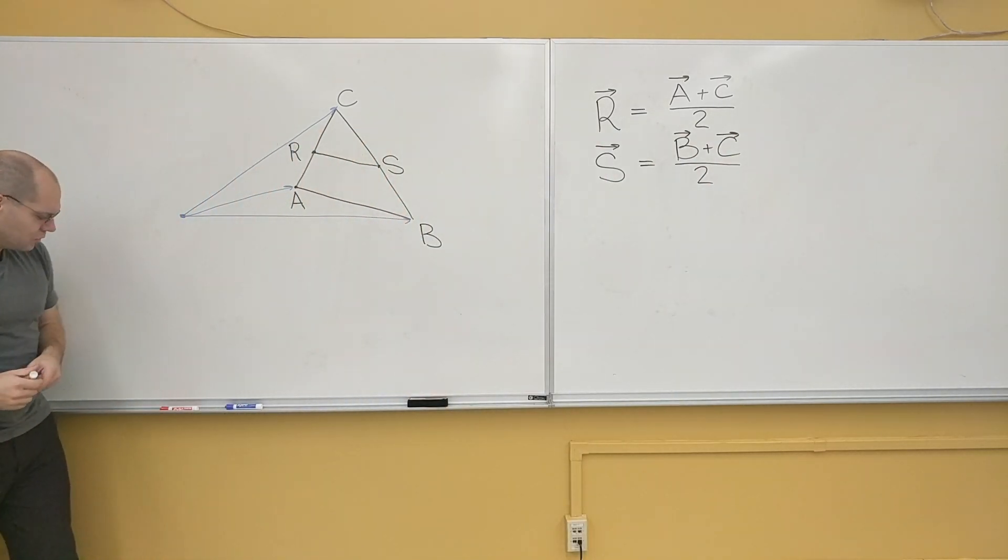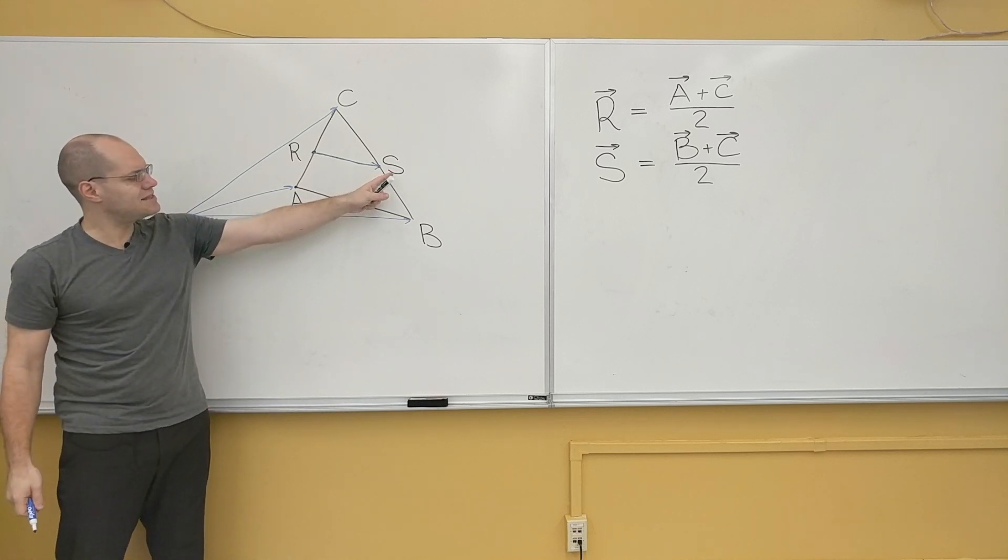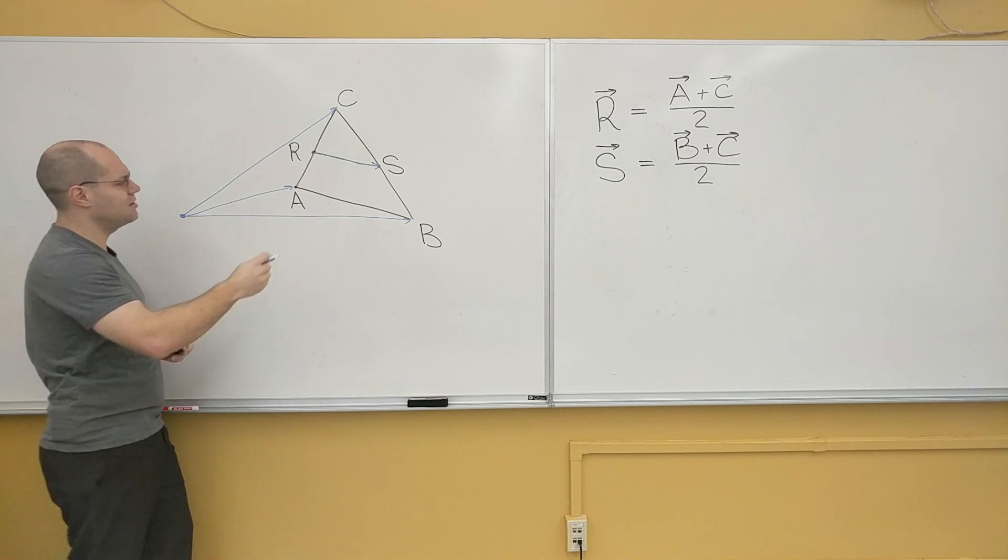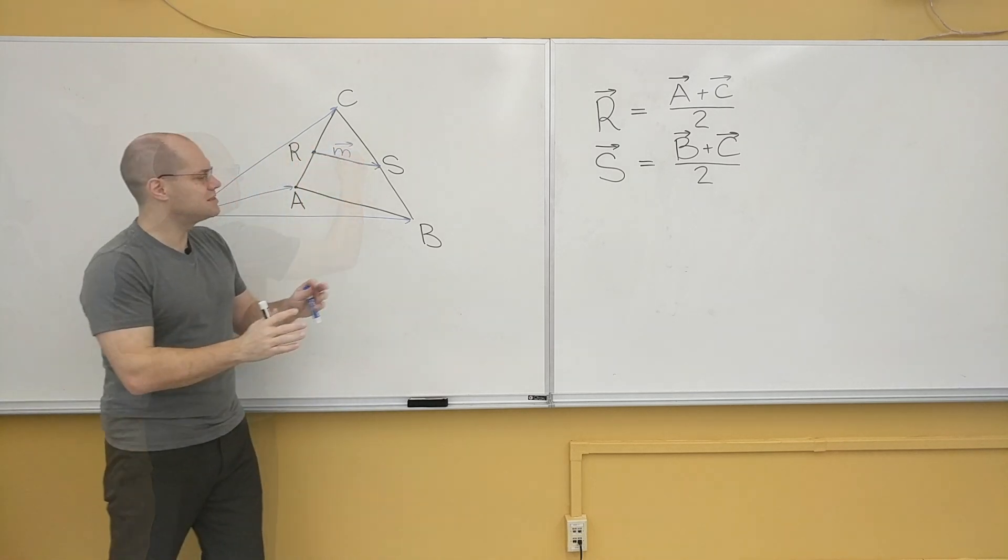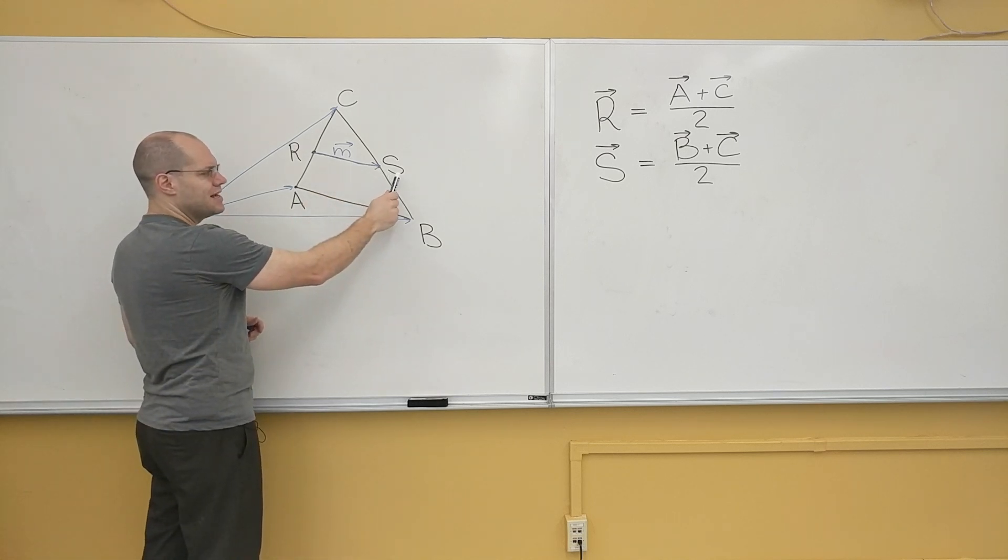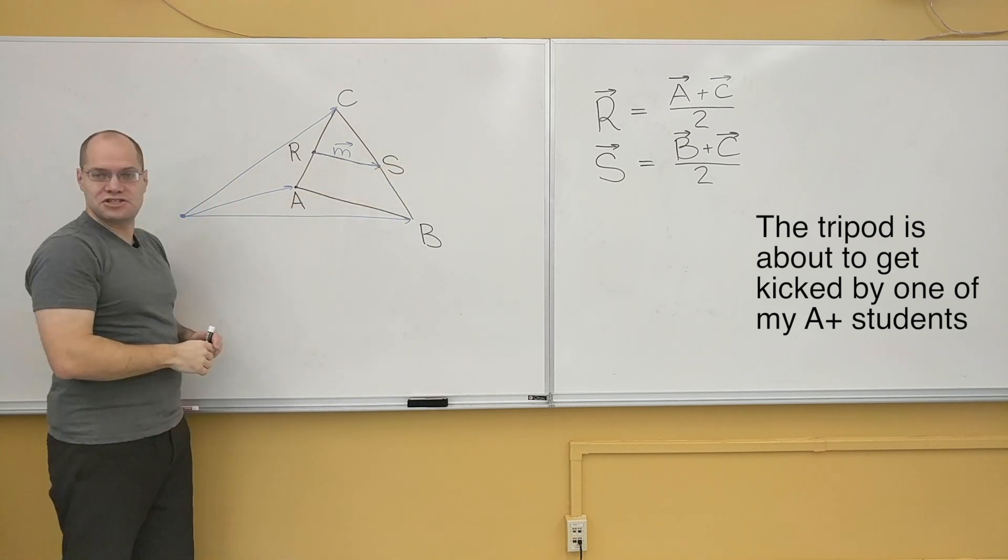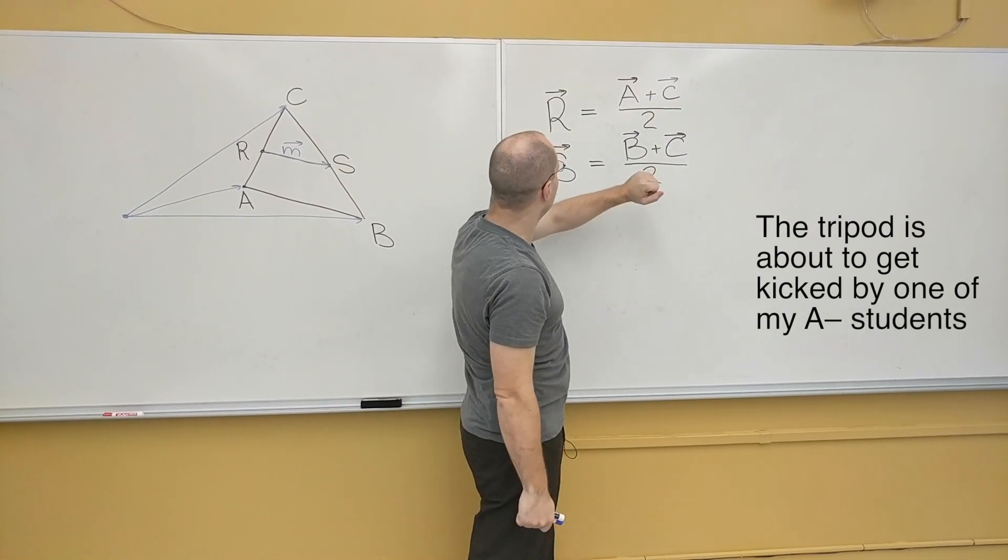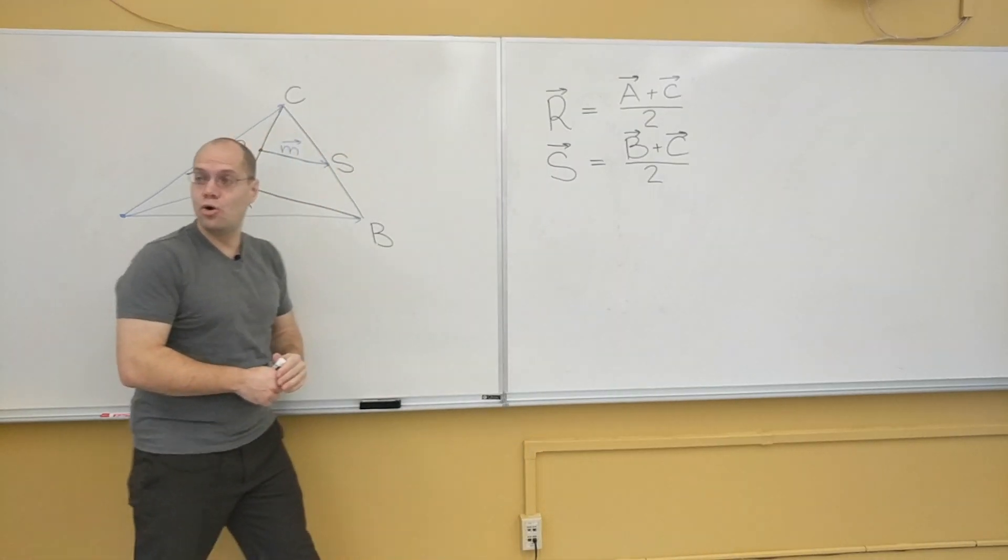We can now express this vector right here, because it is S minus R. I will call this vector little m. Little m equals S minus R. And I will now plug in those expressions, and you will see what will happen. C will cancel, and we'll end up with B minus A over 2.